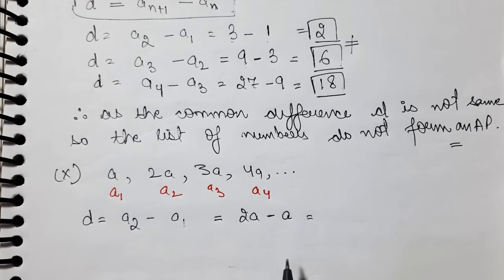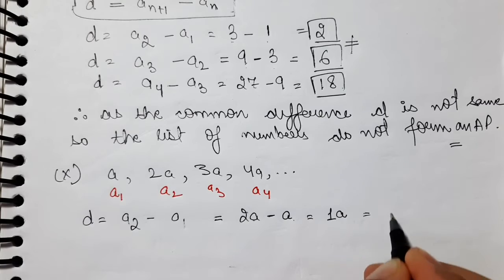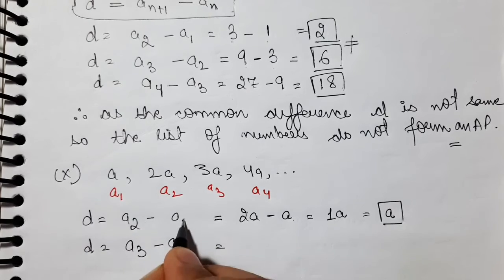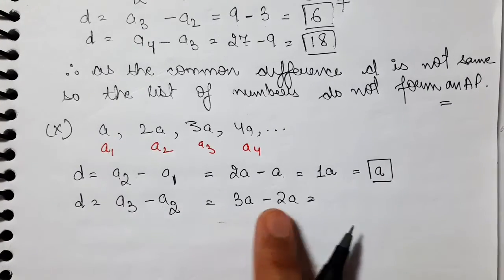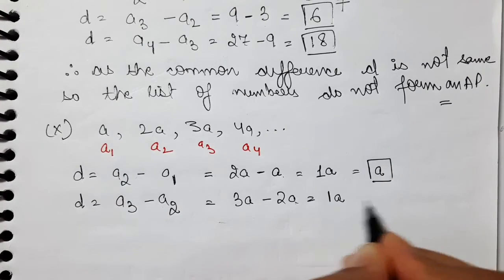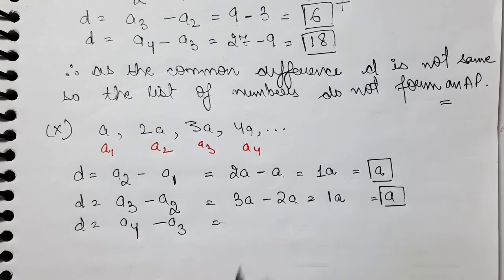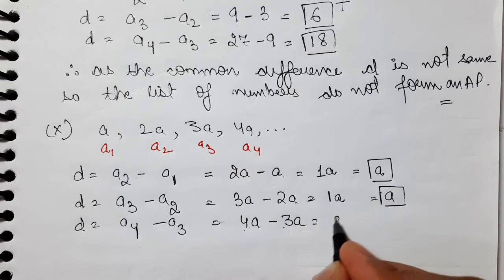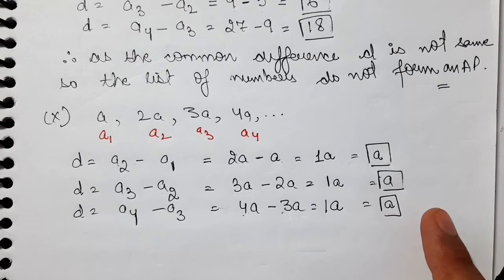The common difference A2 minus A1 is 2A minus A. These are like terms, so we subtract the coefficients: 2 minus 1 equals 1, giving us A. Next, A3 minus A2 is 3A minus 2A, which is again 1A, that is A. Then A4 minus A3 is 4A minus 3A: 4 minus 3 is 1, so this is also A. All three differences are the same.